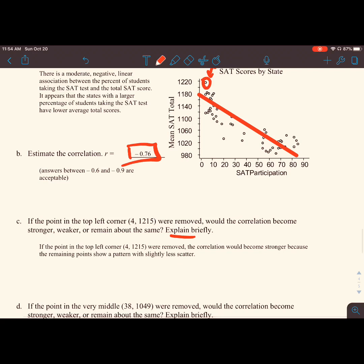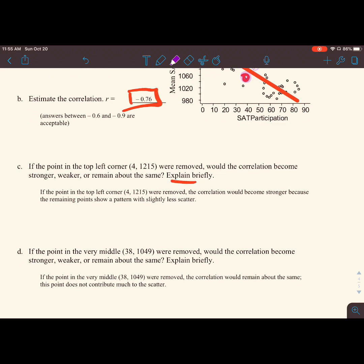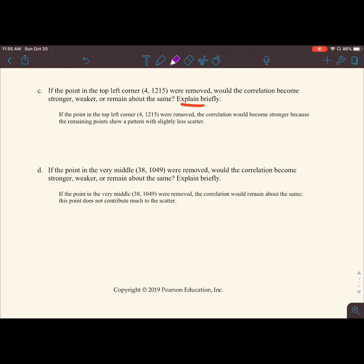If the point in the very middle, 38 comma 1049, were removed, would correlation become weaker, stronger, or remain the same? This point doesn't have a whole lot of leverage. This middle point that I highlighted in purple is not really messing too much with our scatter. We have points above, points below. In general, it's going to fit close to our line of best fit that we sketched in. So the correlation would remain about the same. The point does not contribute too much of the scatter. It's kind of following along many of the other points that fall in that line. The residual is very low, so our point would not have too much influence. Hopefully that helps with Chapter 7's review.